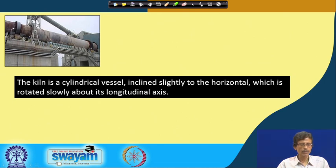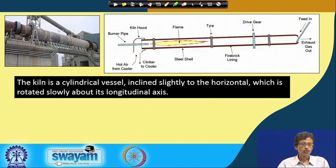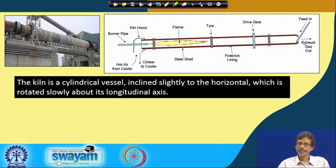The kiln is a little bit inclined and then rotated with all these particular junctions, which are utilized for rotating this particular cylindrical vessel. The inside look is simply like this: you have this particular slanting, and the end which is up is basically the feed-in end.